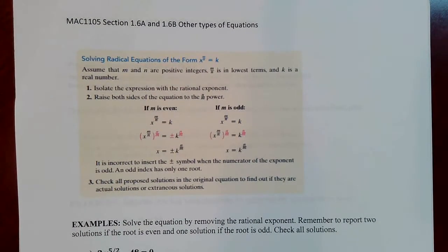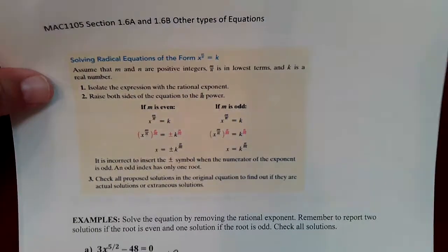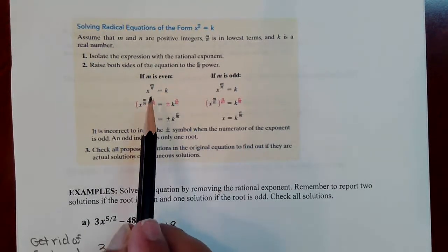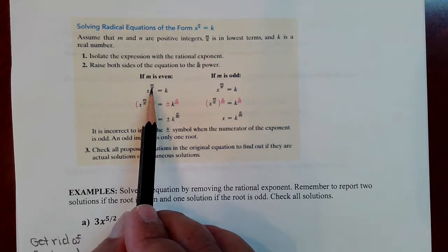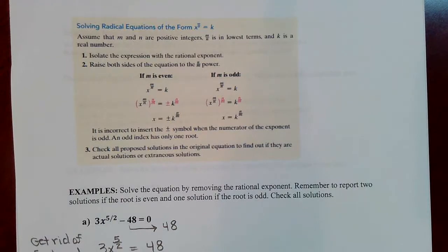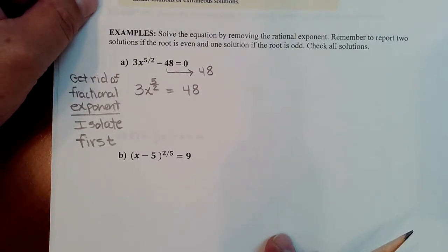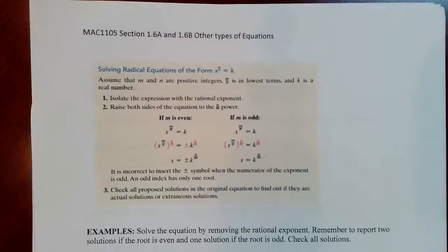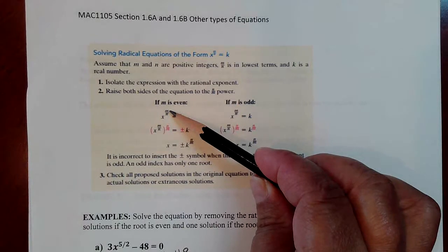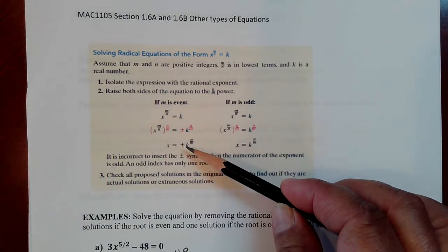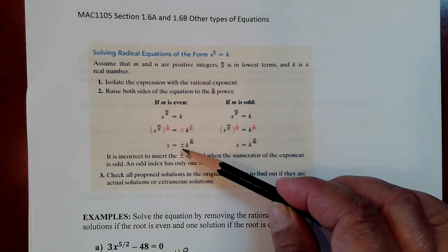This is a continuation of section 1.6 for MAC 1105. We had gotten to examples solving radical equations in the form of a fractional exponent, called a rational exponent, which can be written as radicals. Sometimes there's one solution, sometimes two — you can tell by the numerator. If the numerator is even, there will be both a positive and negative root, just like solving square root problems.